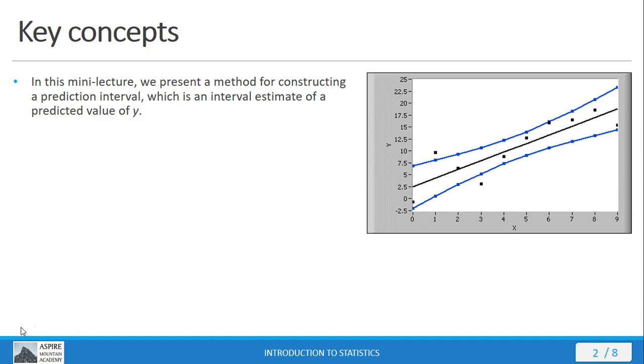In this mini lecture, we're going to show you how to construct a prediction interval. A prediction interval is simply an interval estimate of a predicted value of y. Previous mini lectures were looking at linear regression and using that equation of a line to make a prediction for whatever variable the y of the equation represents. Now we're going to introduce the concept of a prediction interval, which is kind of like a confidence interval but somewhat different.